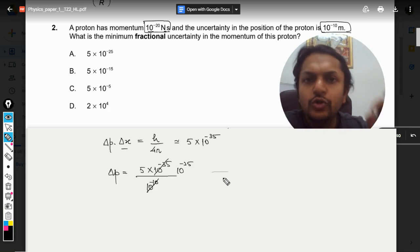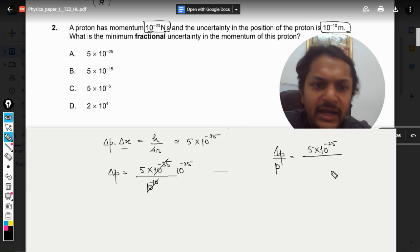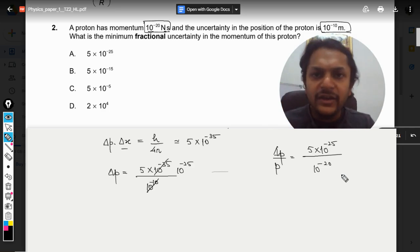So now we know the absolute error in calculating the value of the momentum, but we want fractional uncertainty, so it's very simple. Fractional uncertainty will be ΔP by P, so it is 5×10^-25 divided by the momentum at that point, at that time, and that is 10^-20.